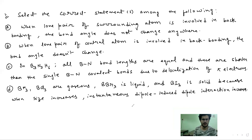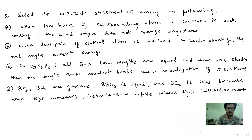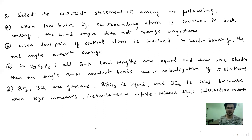Select the correct statement. When the surrounding atom is involved, this is a simple question but there is one concept to teach. If the lone pair is on the side atom — the electron pair or the backbone of the atom — the bond angle will not change. Let's go straight to the BF3 example.